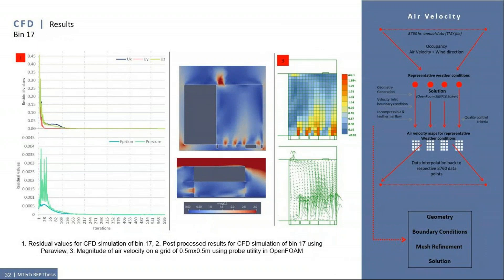24 CFD runs were conducted to extract air velocity distributions for all the bins. Results of bin 17 with inlet air velocity 6 meter per second and 180 degree wind direction have been shown. The solution was run for 600 iterations to ensure the results are stable and convergence criteria of 10 raised power minus 4 for air velocity, pressure, and epsilon. The probe utility of OpenFOAM allows to generate grid points of specified dimensions. The grid point picks up the air velocity of the nearest cell in the mesh, and air velocity distribution of desired spatial resolution can be achieved.